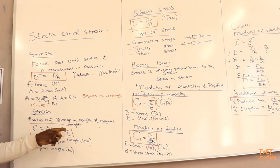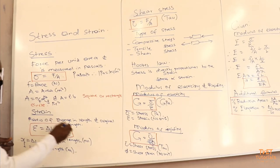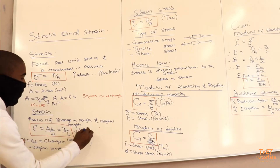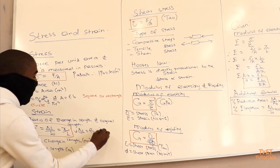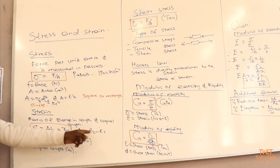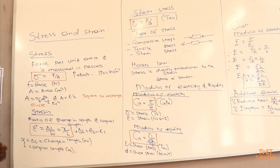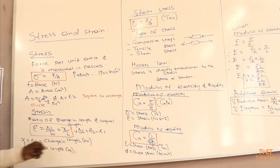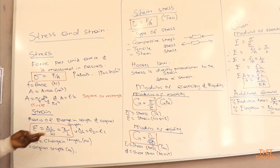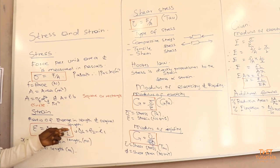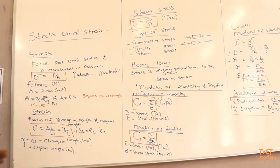Sometimes in the formula we write x instead of change in length divided by the original length. The change in length is L2 subtract L1 — L2 is the final length, L1 is the original length. Since the change in length and the original length are both in meters, the meters cancel and strain does not have a unit.